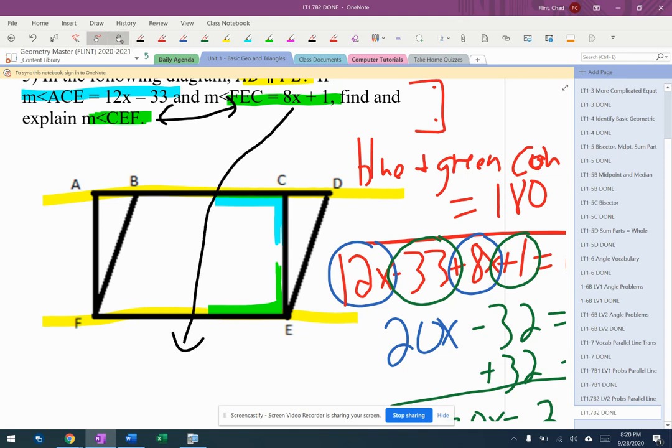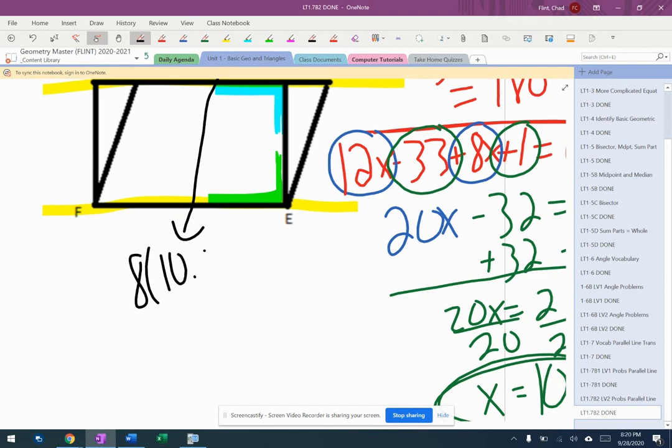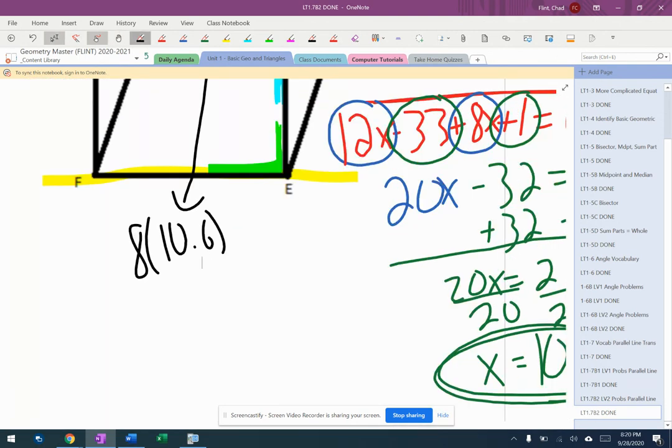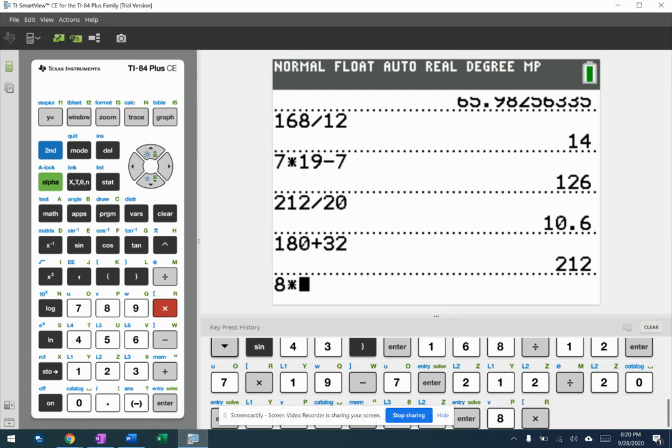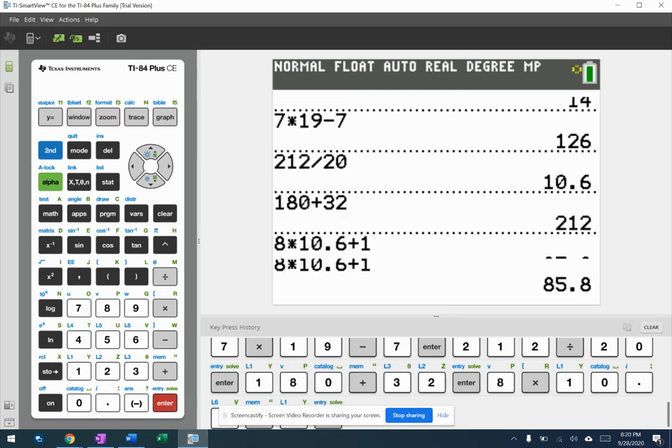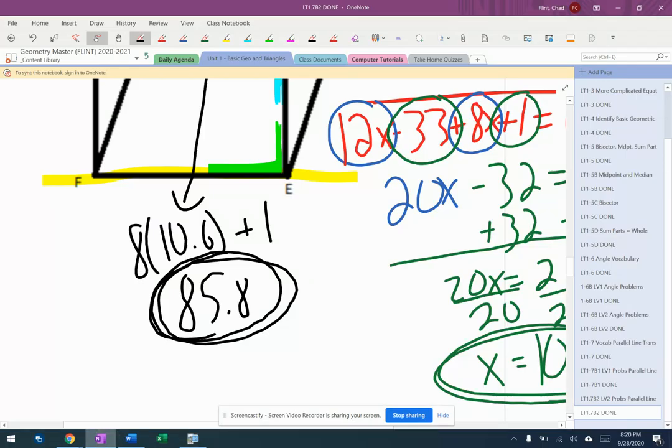So 8 times 10.6 plus 1. All right. So let's test myself here. So 80 and 4.8 is 84.8. So I think this is 85.8. Let's double check this. 8 times 10.6 plus 1. 85.8. All right. So 85.8.